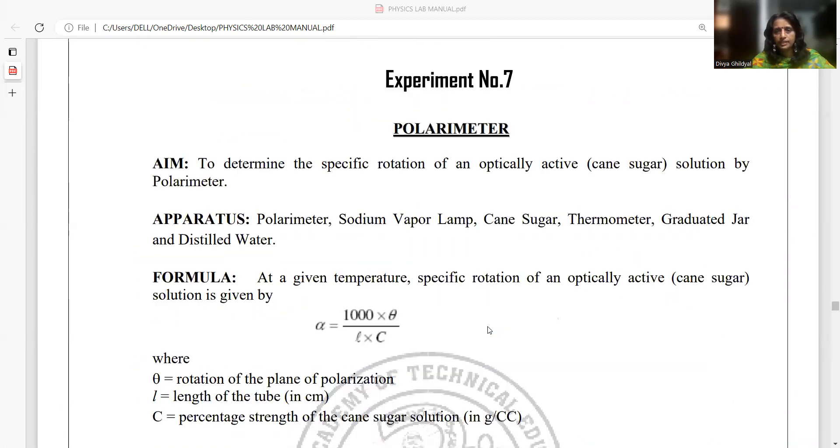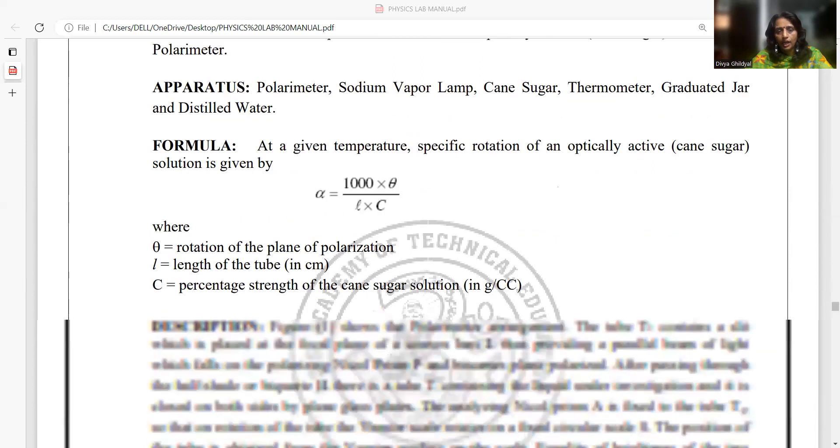Next, polarimeter. In polarimeter experiment, we will find the specific rotation of an optically active substance, that is, sugar solution given to us. We require a polarimeter, a sodium vapor lamp, sugar solution, and distilled water.